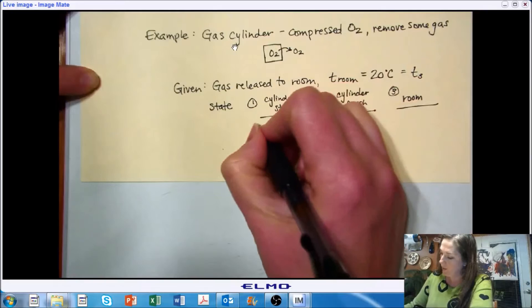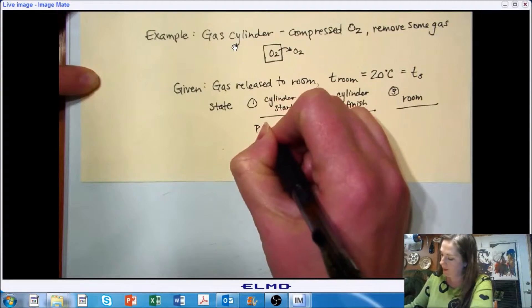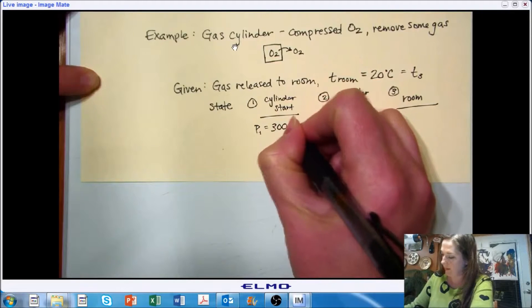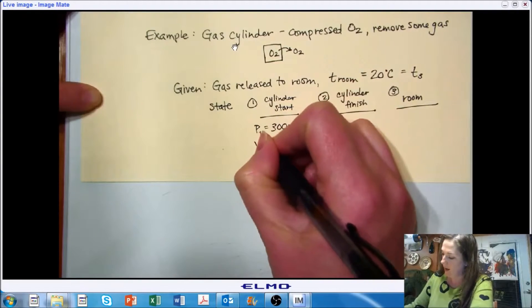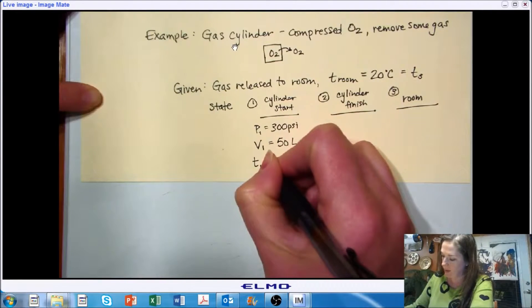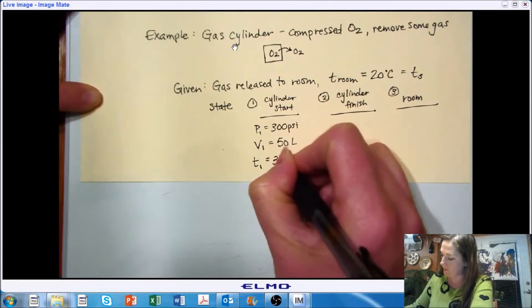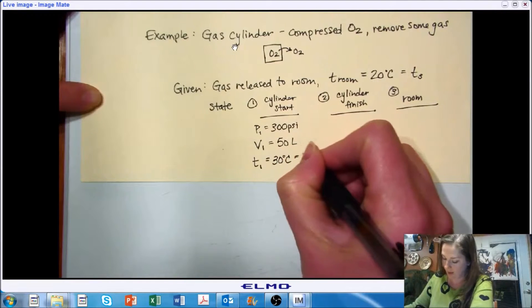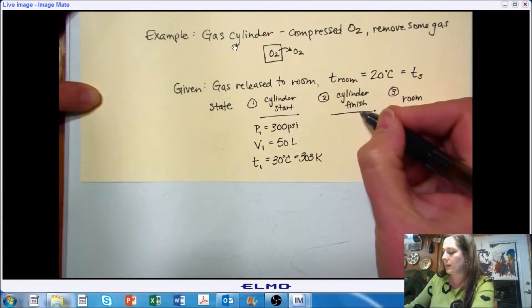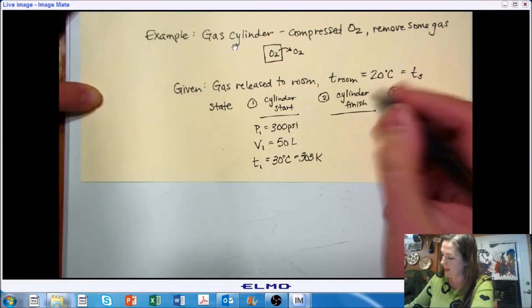So when our cylinder starts, we are going to start with a pressure of 300 psi. And the volume of our cylinder is 50 liters. And our starting temperature of our cylinder is 30 degrees C, or 303 kelvin.